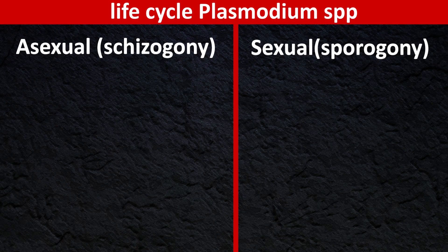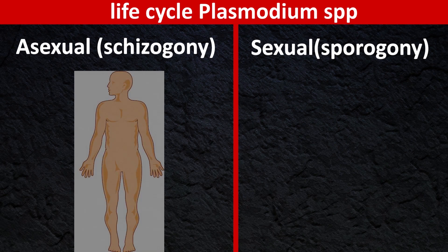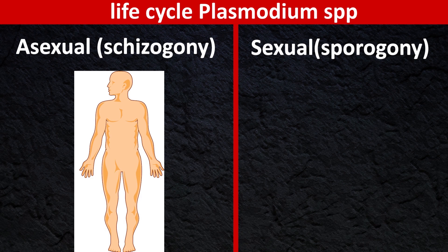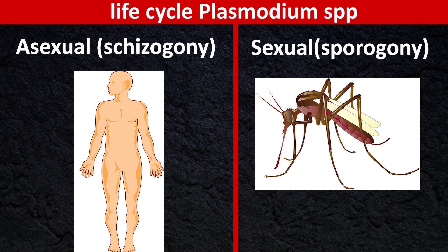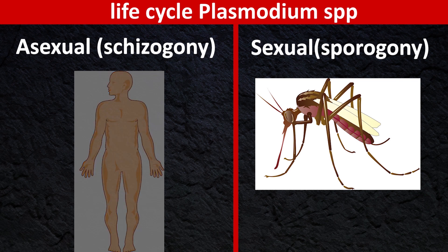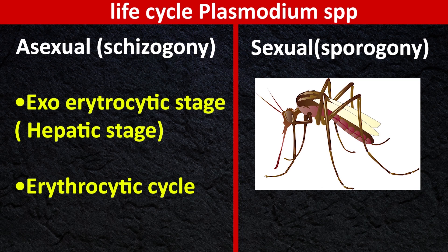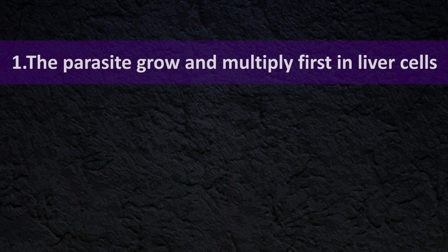To complete the life cycle of plasmodium species requires two phases: asexual and sexual. When we talk about human malaria, the asexual stages occur in human while sexual stages occur in anvilous mosquito. Again, this asexual phase can be divided into two stages: exoedrocytic stage or hepatic stage, and erysocytic stage.